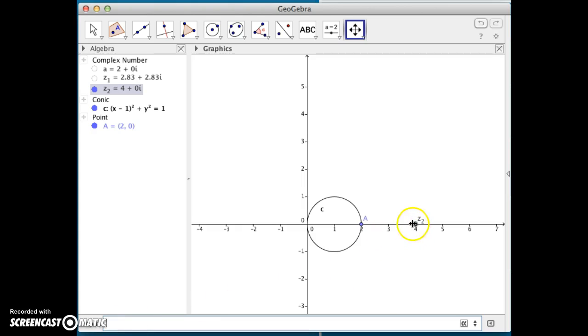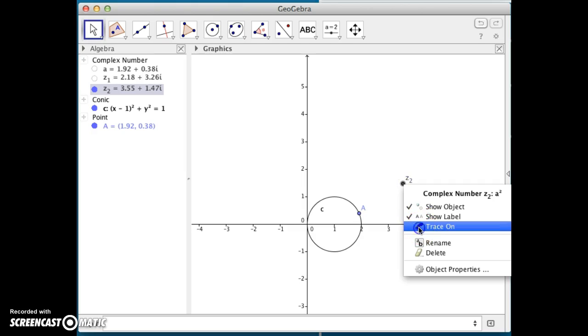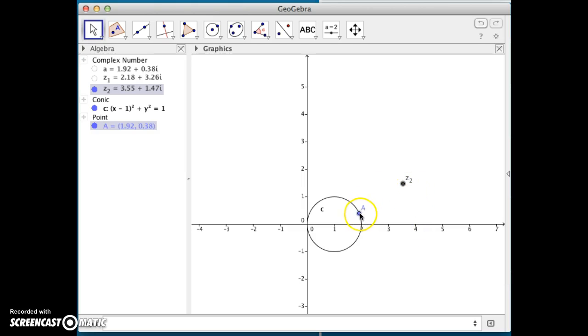A squared is now, 2 squared goes to 4. That seems to make sense. And if I move point A, I see that it, well, I thought it was going to make a circle, but it looks like it's curving in there. So, not quite a circle. We can trace those. I'll right-click and turn the trace on. And now we see this interesting map.